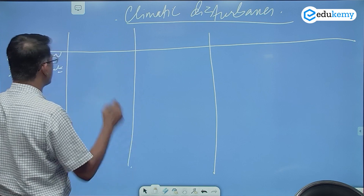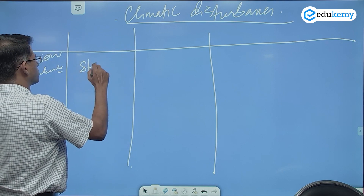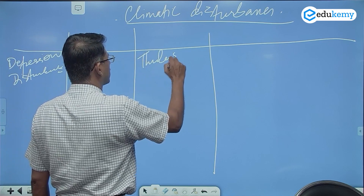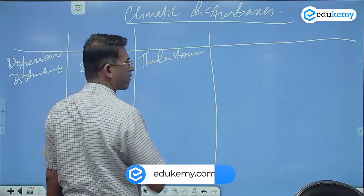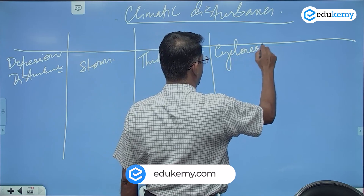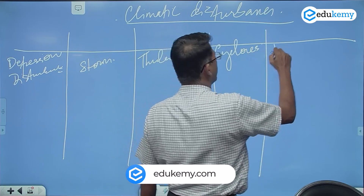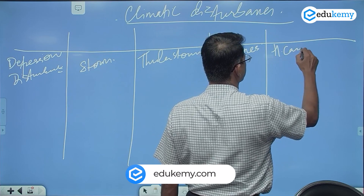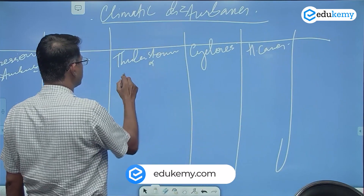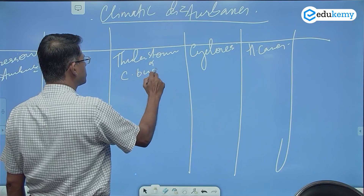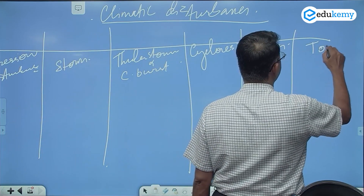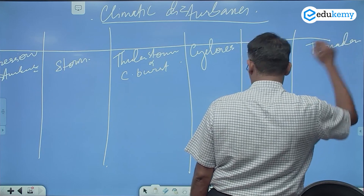Then we have what are called storms, then thunderstorms, cyclones, hurricanes, and also cloud bursts. And we have tornadoes. These are the main types of climatic disturbances.